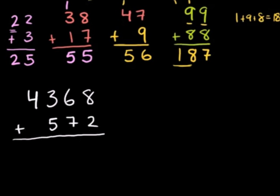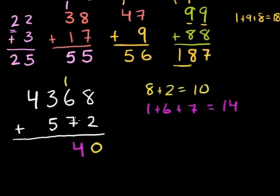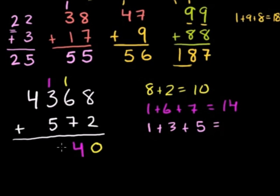8 plus 2 is equal to 10. Put the 0 in the ones place, carry the 1. Now we're in the tens place: 1 plus 6 plus 7. 1 plus 6 is 7, 7 plus 7 is 14. Carry the 1. In the hundreds place: 1 plus 3 plus 5 — 1 plus 3 is 4, plus 5 is 9. Nothing to carry. And in the thousands place, we have nothing to add the 4 to, so we bring it straight down.